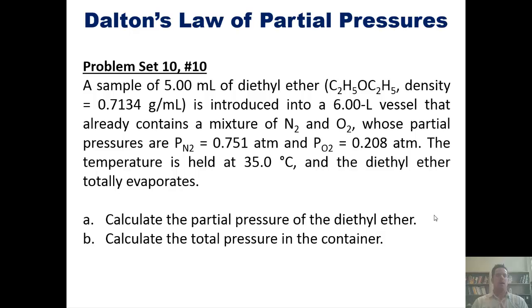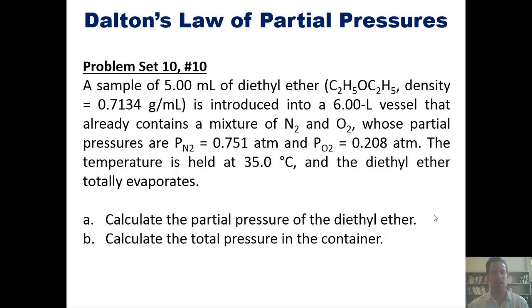And separately, a sample of 5 milliliters of diethyl ether, whose density is given there, is introduced into a 6-liter vessel that already contains a mixture of nitrogen and oxygen, whose partial pressures are as follows. The temperature is held at 35 degrees Celsius and the diethyl ether totally evaporates.